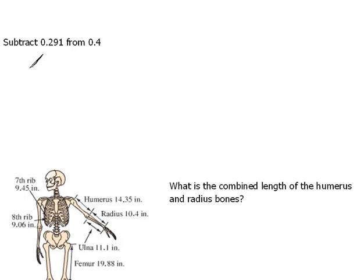Now, what if we just had words? If it said subtract 0.291 from 0.4. Well, in order to do that, we need to know what order we're doing the subtraction in. When you subtract from something else, that means that has to be our first number, and we subtract from it the second number.